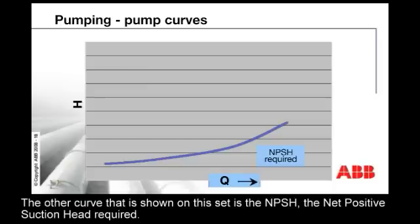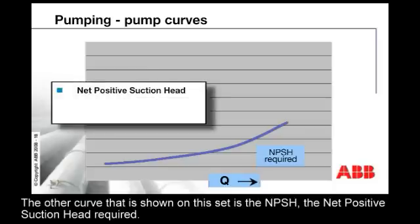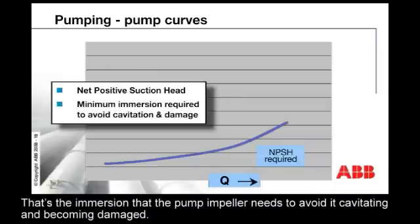The other curve that's shown on this set is the NPSH, the net positive suction head required. That's the immersion that the pump impeller needs to avoid it cavitating and becoming damaged.